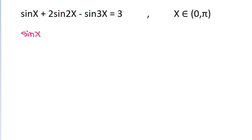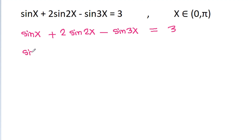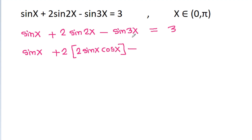We have sin x minus 2 sin 2x minus sin 3x is equal to 3. And it is sin x plus 2 times sin 2x, where sin 2x is 2 sin x cos x, minus sin 3x which is 3 sin x minus 4 sin cube x, that is equal to 3.